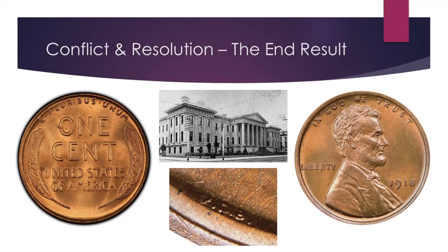Different compromises were proposed: do nothing, remove the V and D, or move the VDB to a more secretive location. Interestingly, Barber ended up forcing the VDB completely off the coin — he wouldn't hear any compromise. Brenner objected but didn't put up too much of a fight. With the initials taken off, people scrambled to hoard the coins, and apparently the 1909-S VDB sold for more than one cent immediately after being released — which is not normally the case.